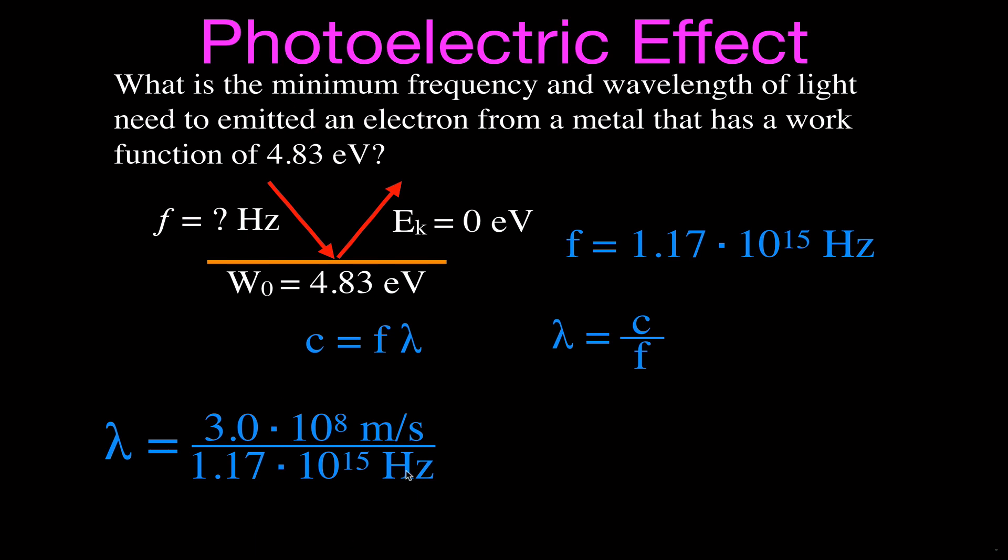This is like 1 over S. That will cancel with this 1 over S, and that will be left with meters, and that's 2.56 times 10 to the minus 7 meters. And we're talking about light in the general visible spectrum range. This is actually just outside the visible spectrum because it's about less than 300 or 350 nanometers. That turns out to be 256 nanometers.